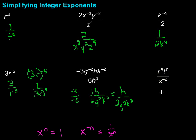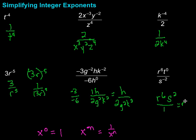How about this one? We have r to the sixth — that's just positive, so we're good there. t to the zero would just be 1, and 1 times r to the sixth is still r to the sixth. Then we have s to the negative second on the bottom — that's going to get flipped to the top as s squared. What's left on the bottom? Nothing — it would just be over 1, so we can simplify that to r to the sixth times s squared.